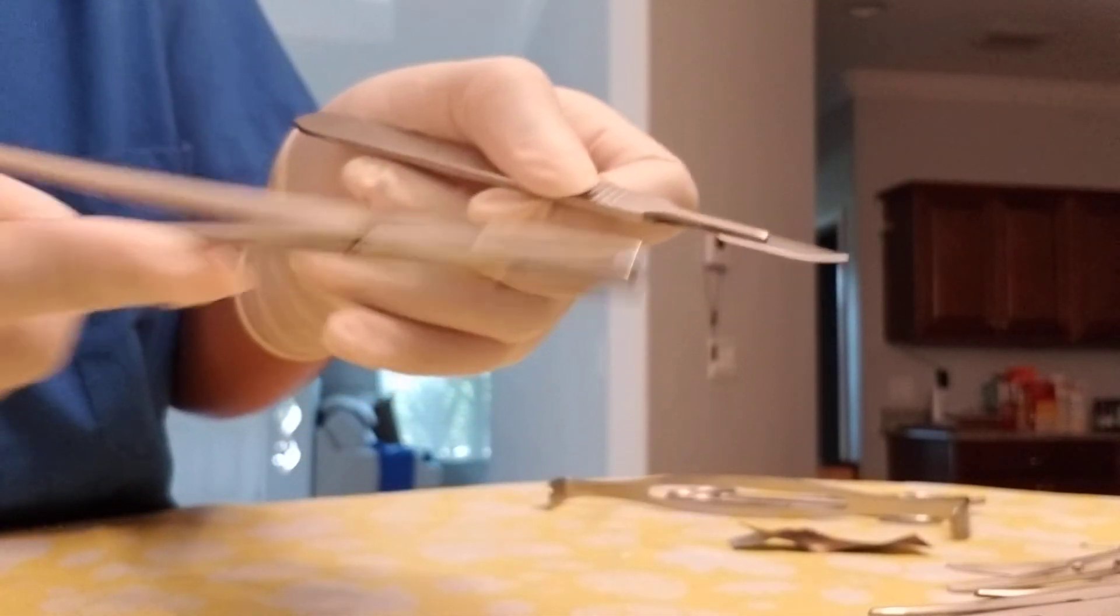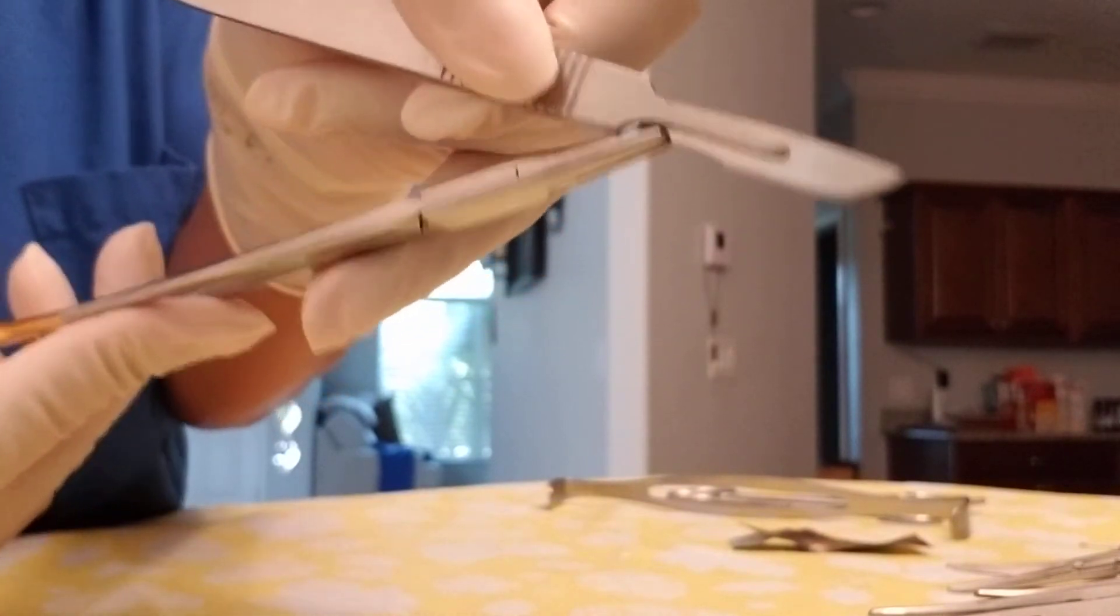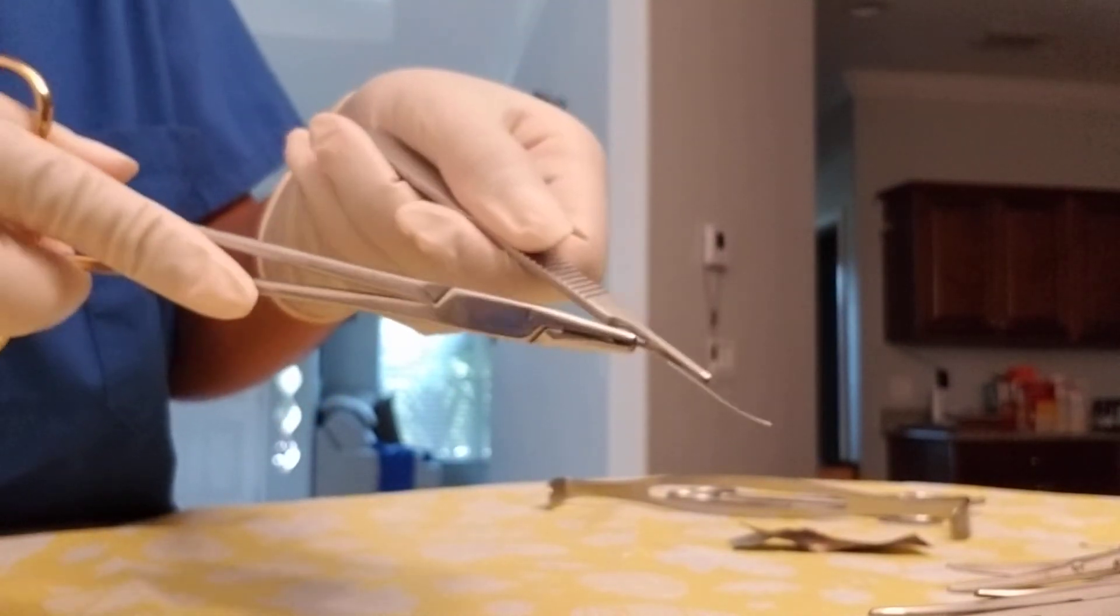You're going to grab down at the bottom, pull down a little bit, and push off, and your blade will come off. Then you secure it in your needle mat.